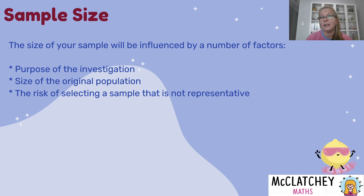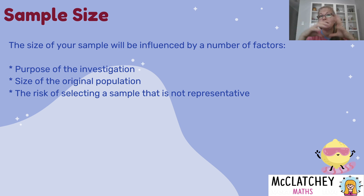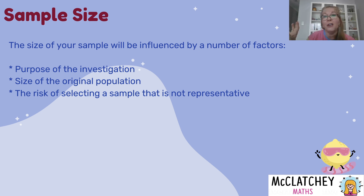We also need to consider the size of the original population — the mathematical formulas I'll show you depend on knowing how big the population is. If you've got a massive population such as the population of Earth, that will influence your sample size. We also need to think about the risks of selecting a non-representative sample — for example, if you just picked 10 people for a medical trial, those 10 are probably not going to reflect the people who will use the drug in future.